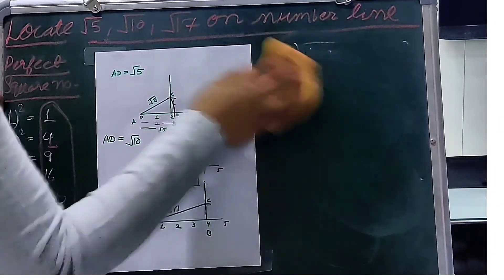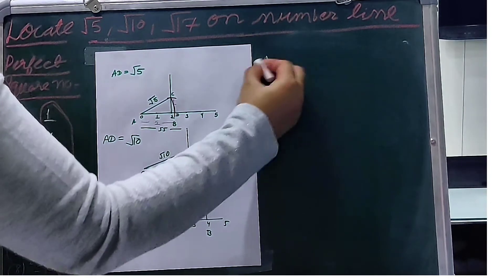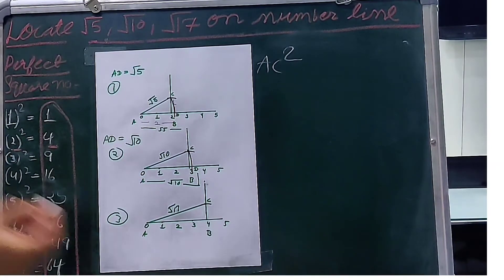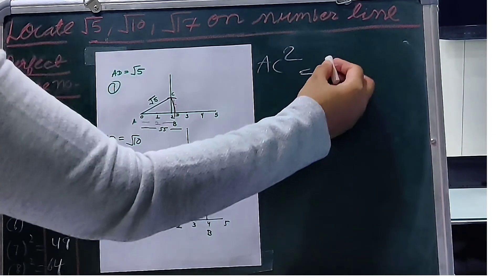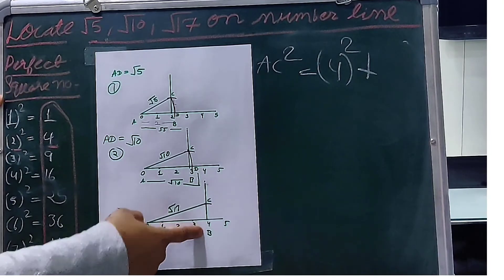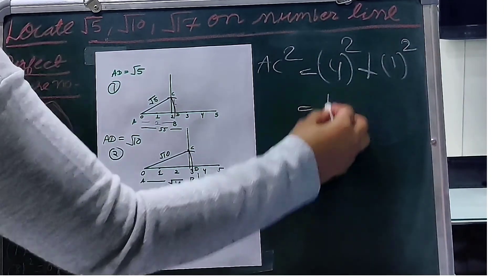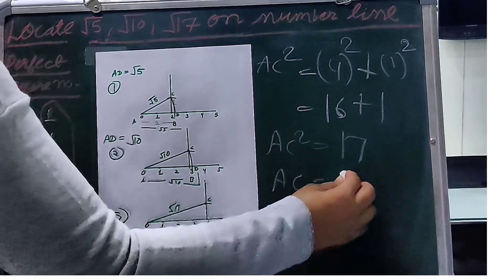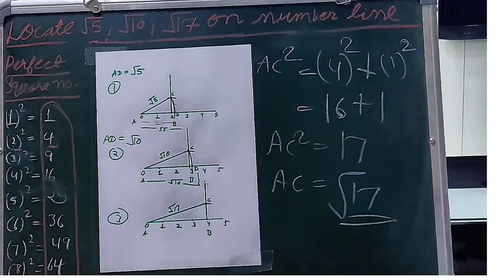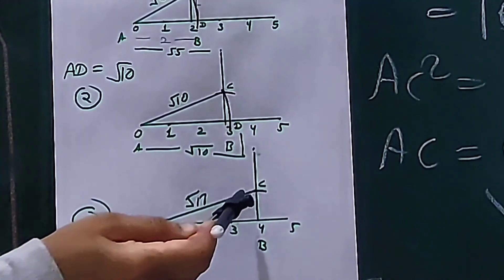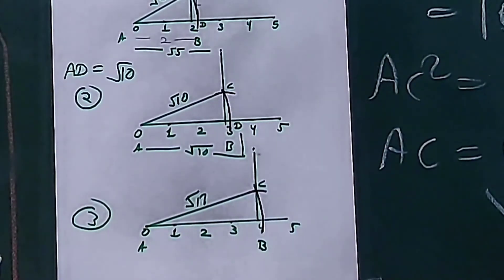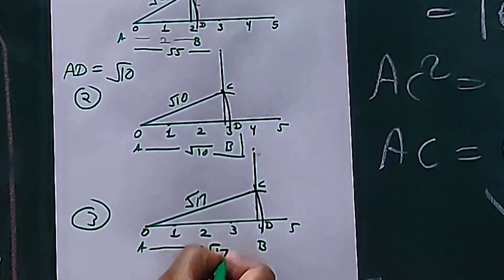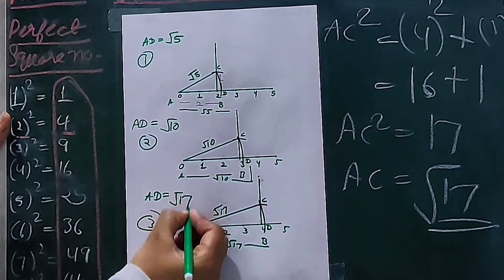I will show you by Pythagoras theorem. For picture 3, AC squared equals AB squared plus BC squared. AB is 4 units, so 4 squared plus BC squared equals 1 squared. 4 squared is 16, plus 1 gives AC squared equal to 17, so AC equals root 17. Similarly, make an arc from this point onto the number line and we get root 17 on the number line. AD is equal to root 17.